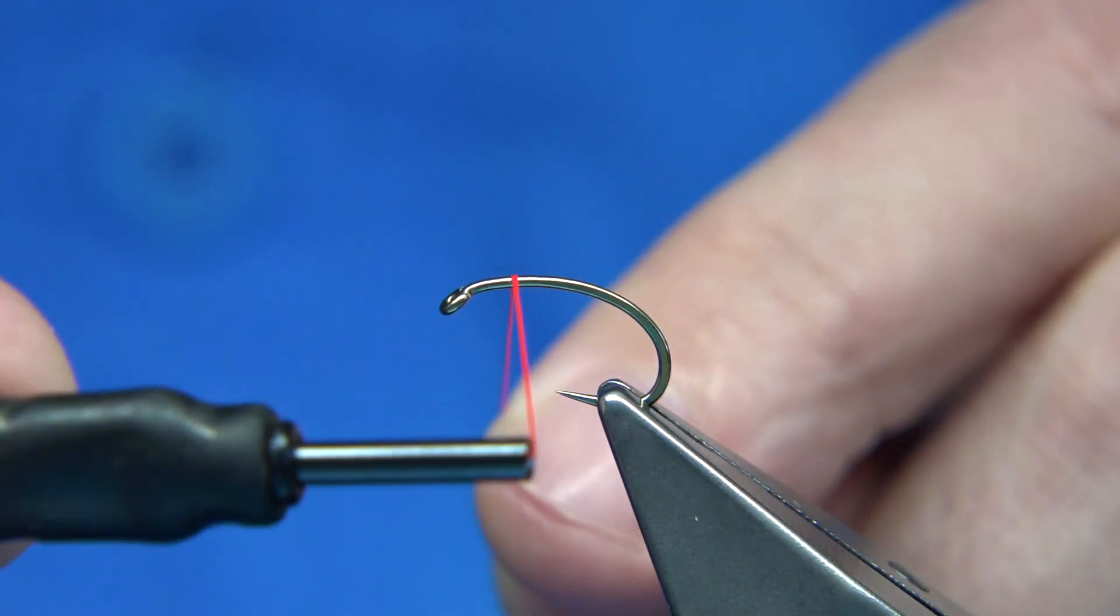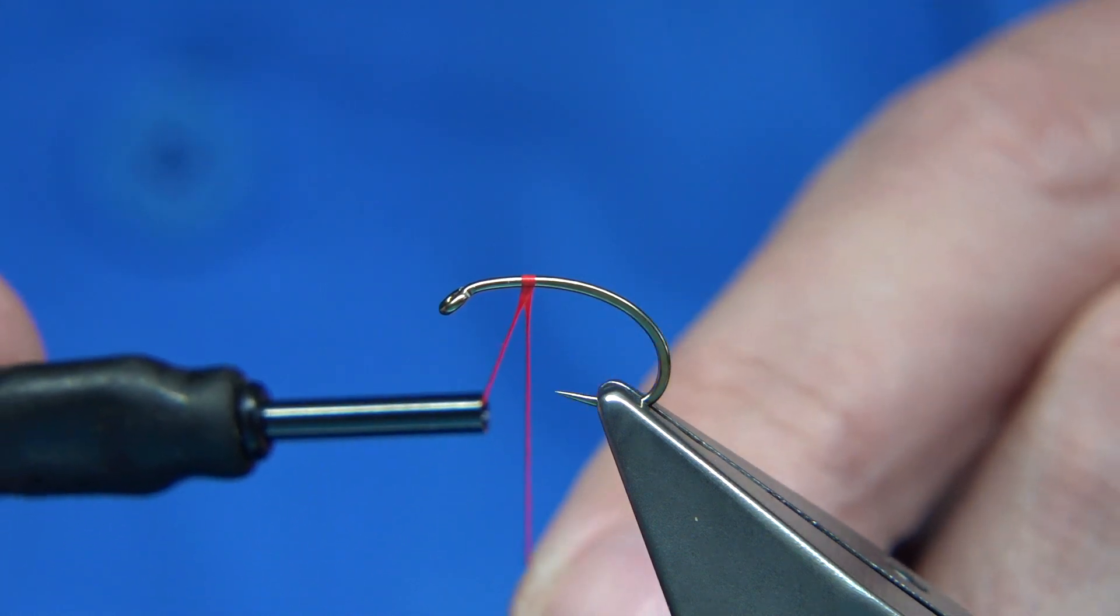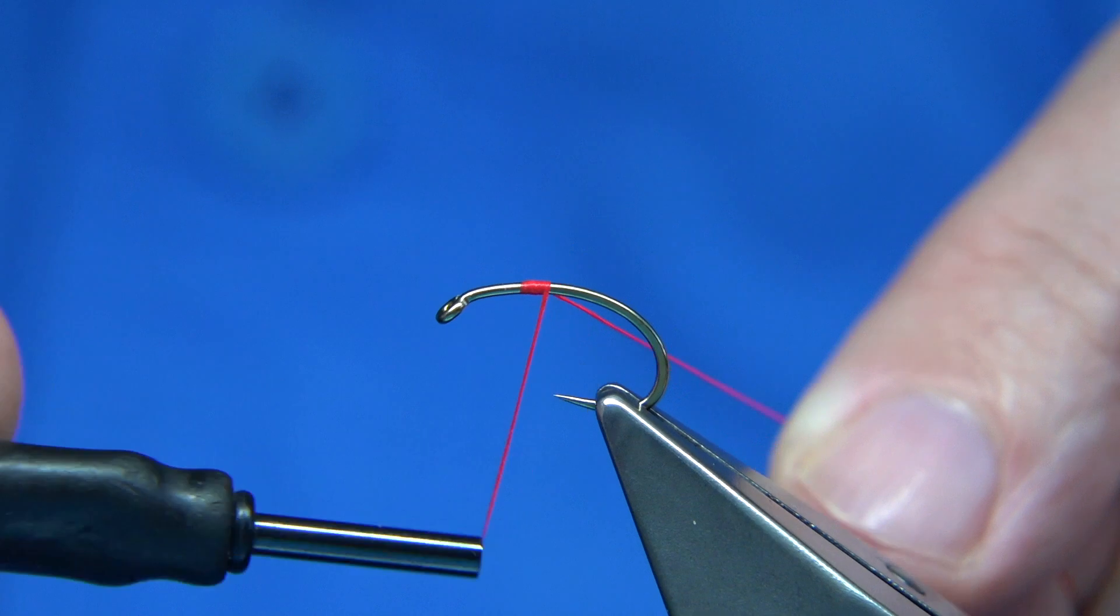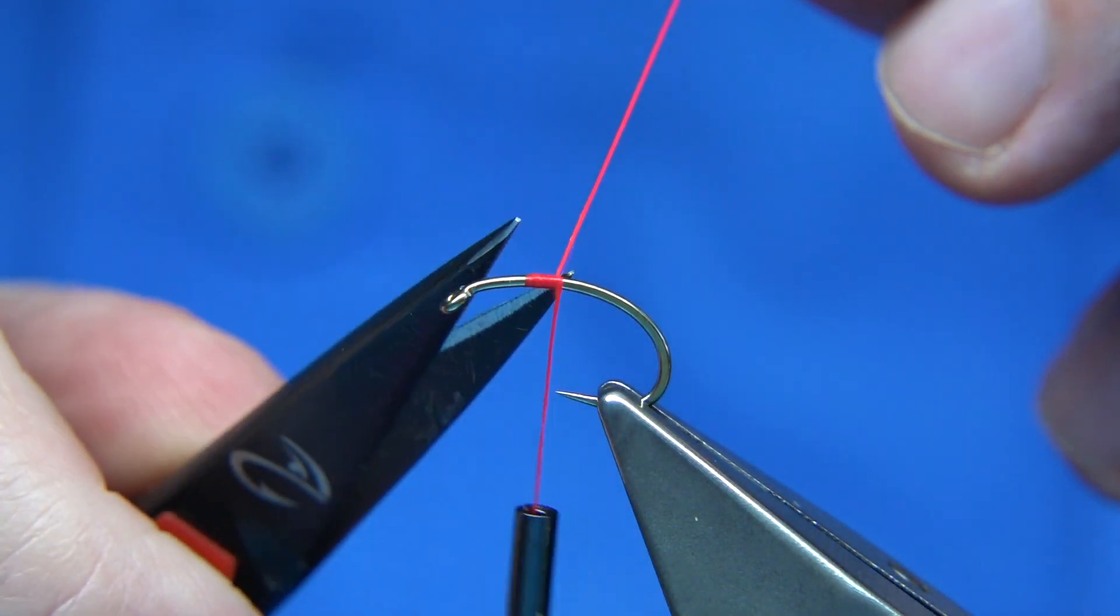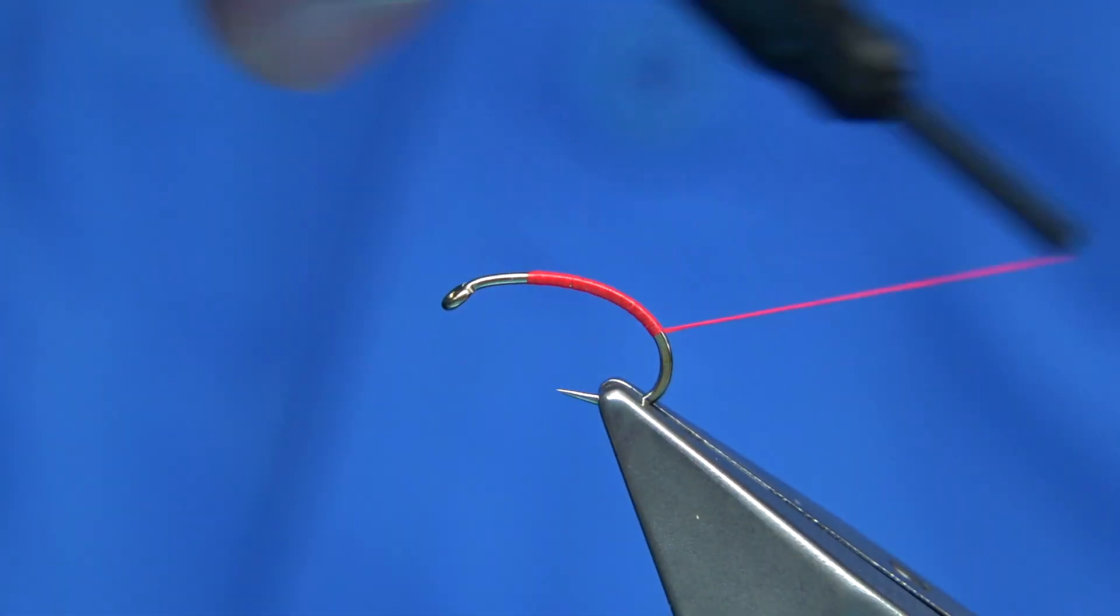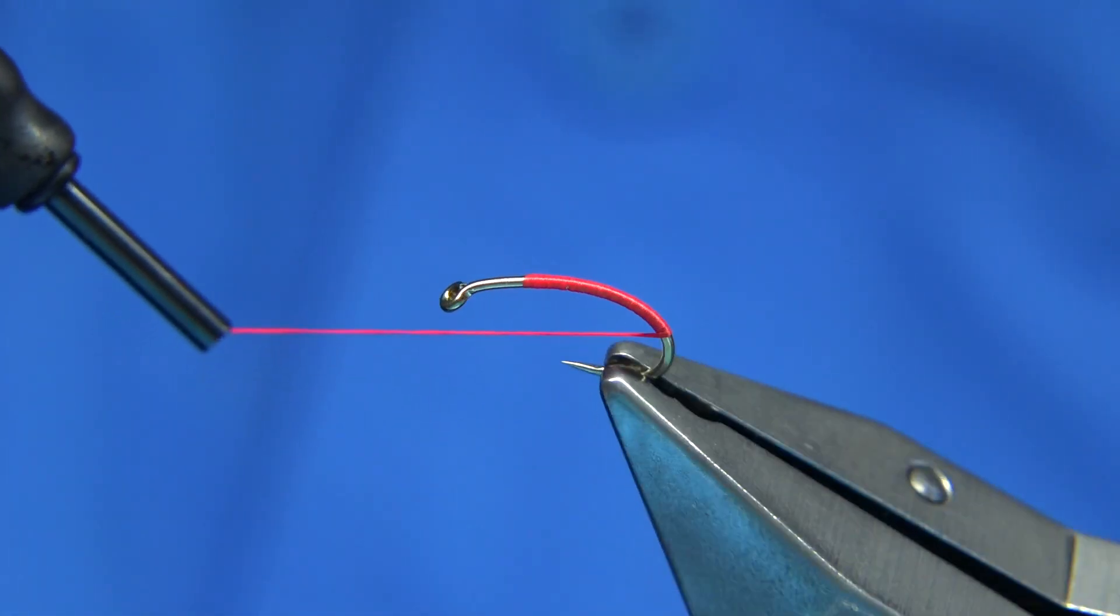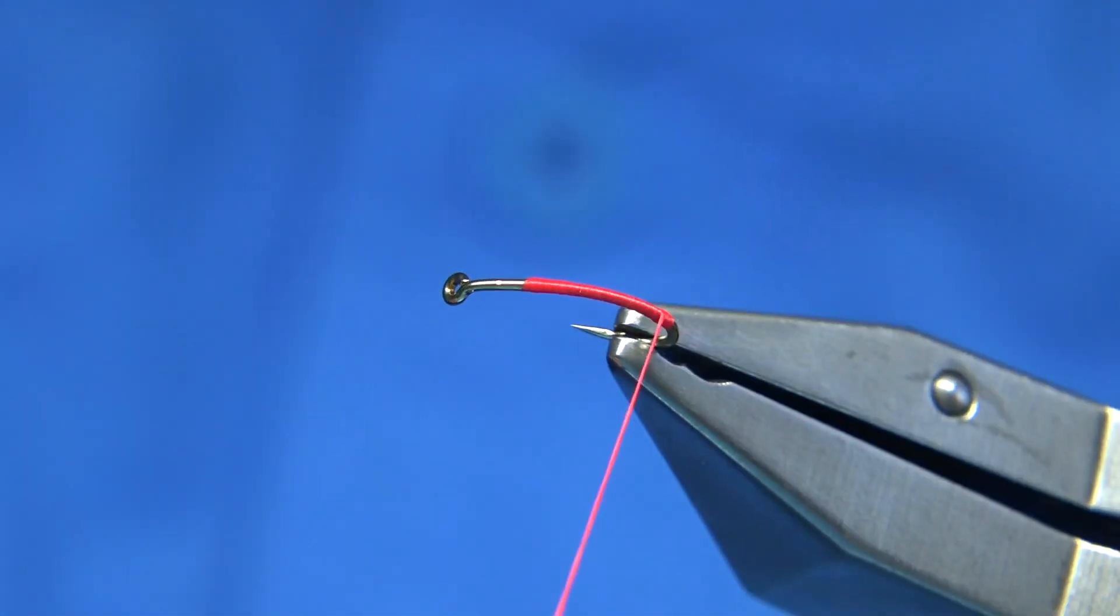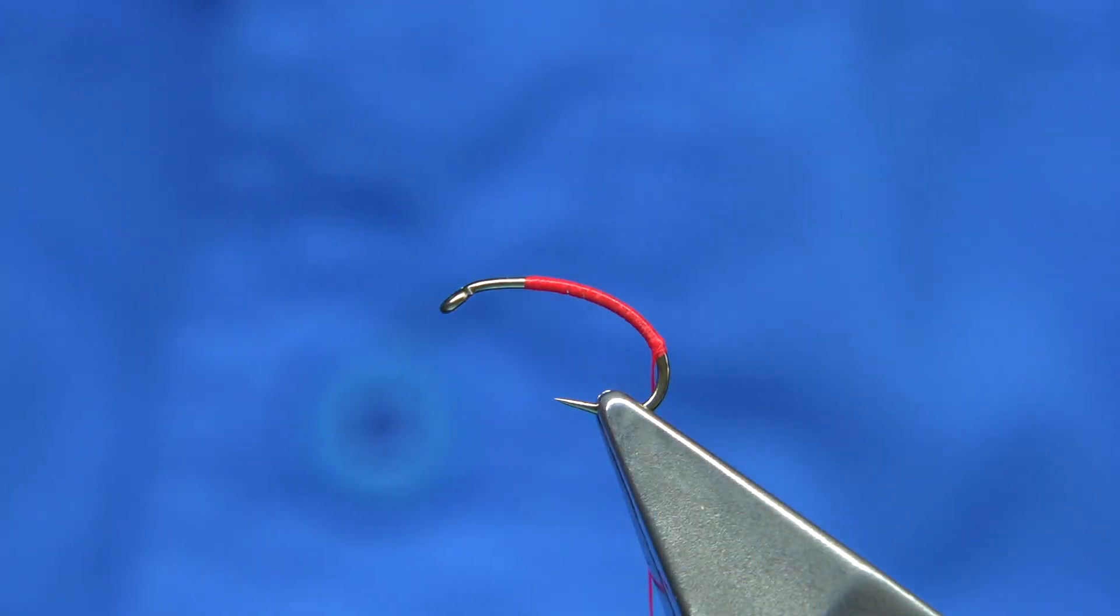Now what I'm going to do is start basically beginning of the thorax. When you catch it in, we then take away the waste and then wind down, spreading the floss out as you go. At this point here I'm going to form a small tag with the floss, so it's just two or three turns up.